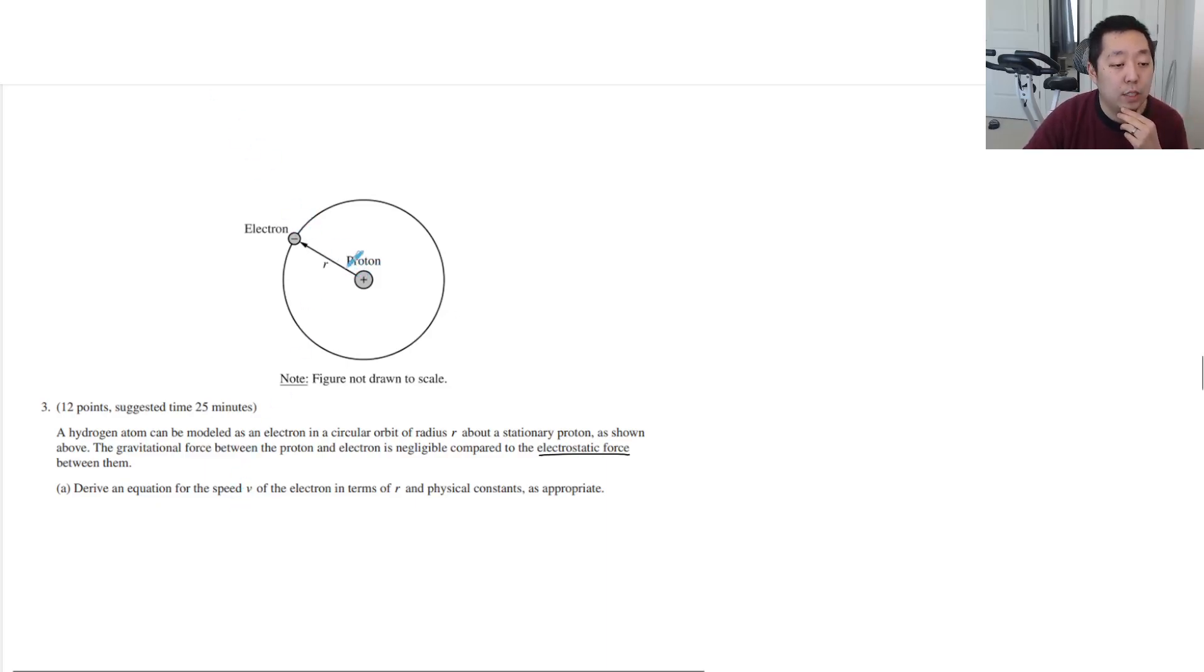All right, so they're being attracted to each other. I'm going to draw a free body diagram of the electron, and it just has the electrostatic force here. And it's moving in a circle. So the electrostatic force is just equal to k q1 q2 over r squared, and that equals ma. Net force equals mass times acceleration, just like you guys did in AP Physics 1.